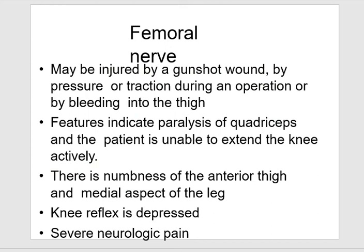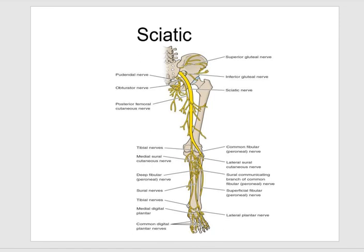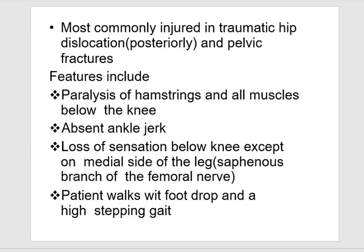Femoral nerve injury in the lower limb is caused by gunshot, pressure, traction during operation, or bleeding into the thigh. Features include quadriceps injury with the patient unable to extend the knee actively, numbness on the anterior thigh and medial aspect of the leg, depressed knee reflex, and severe neurological pain. The sciatic nerve is most commonly injured in traumatic hip dislocation posteriorly and in pelvic fractures. There is paralysis of all the hamstrings and all muscles below the knee, absent ankle jerk, and loss of sensation below the knee except on the medial side of the leg — the saphenous branch of the femoral nerve.